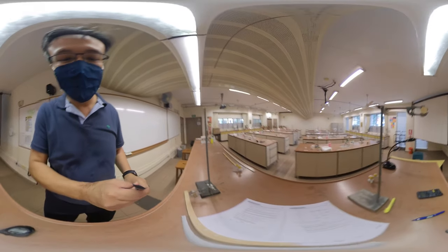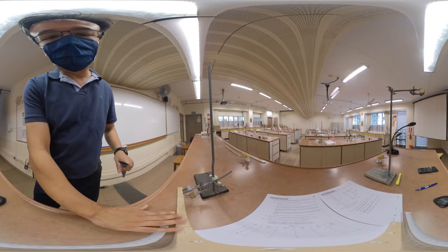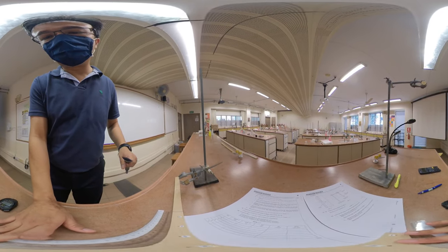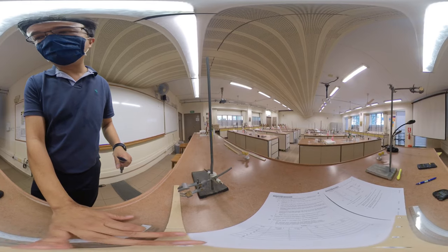So we've got a retort stand and we've got a special wooden strip. You can see six holes numbered 1, 2, 3, 4, 5, and 6.